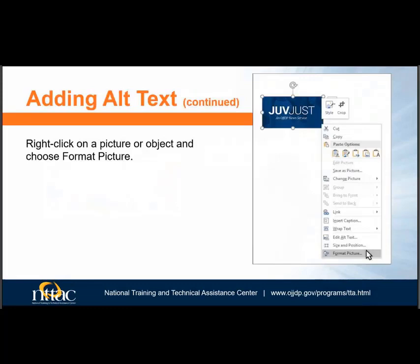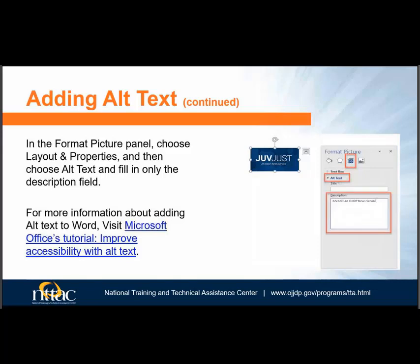Now that you know how to write alt text, let's go over how to add it to your Word document. It is easy to add alt text to images in Word files. First, right-click on the image and choose Format Picture. If you have a newer version of Word, you could select Edit Alt Text instead. Select the Layout Properties icon in the Format Picture pane. Expand the Alt Text drop-down and type the alt text in the Description field. Don't use the title field unless the file will never become a PDF file, because the title field does not convert to alt text when the file is converted to a PDF.